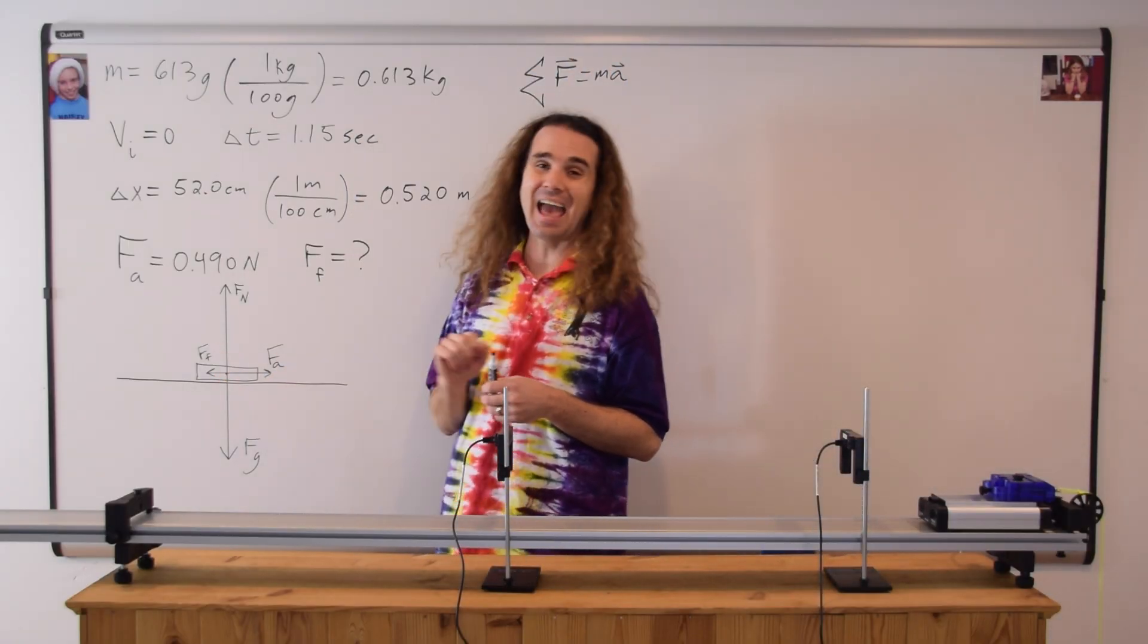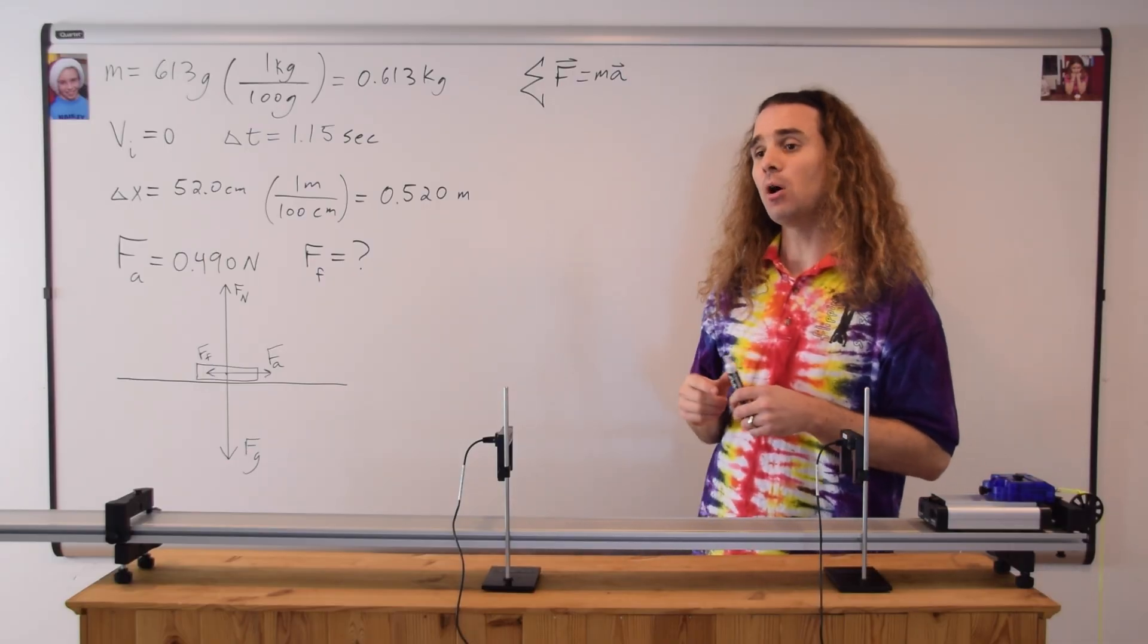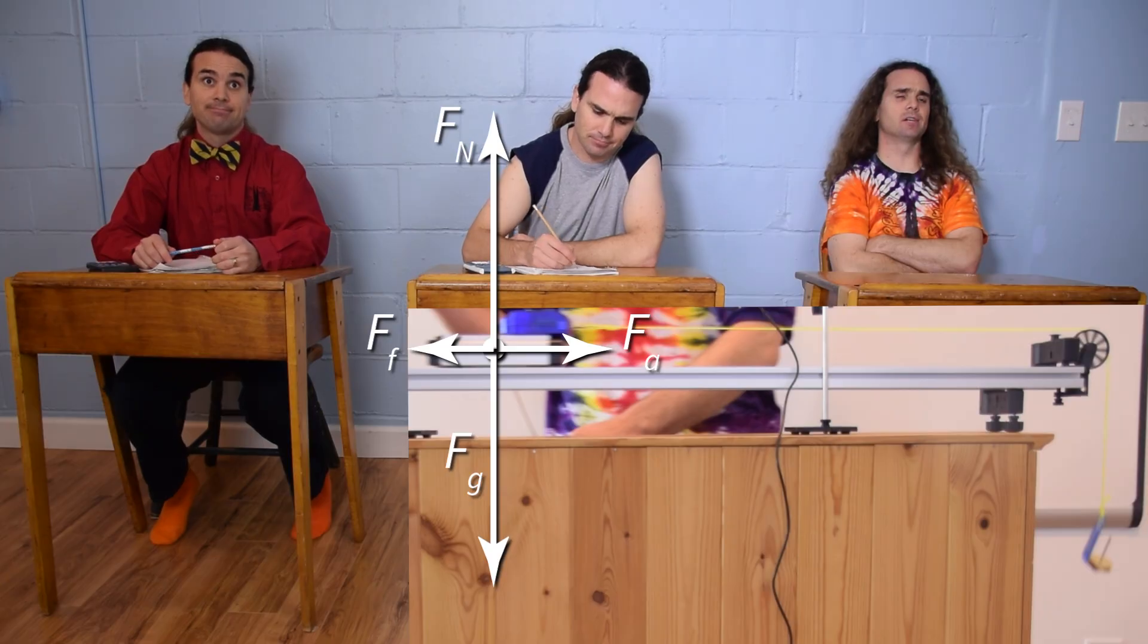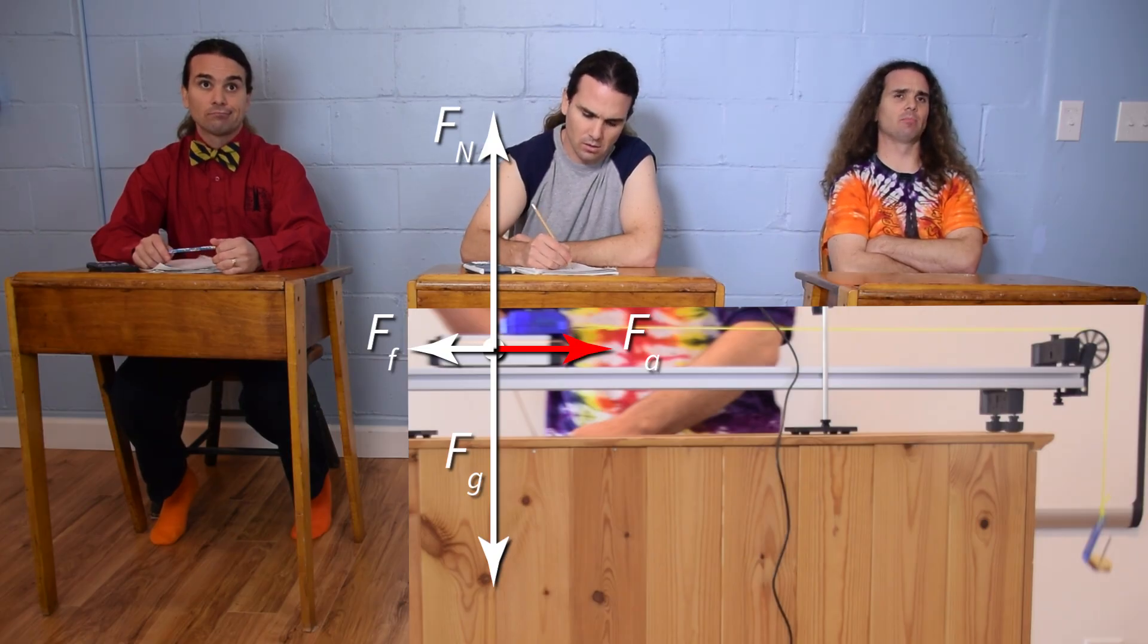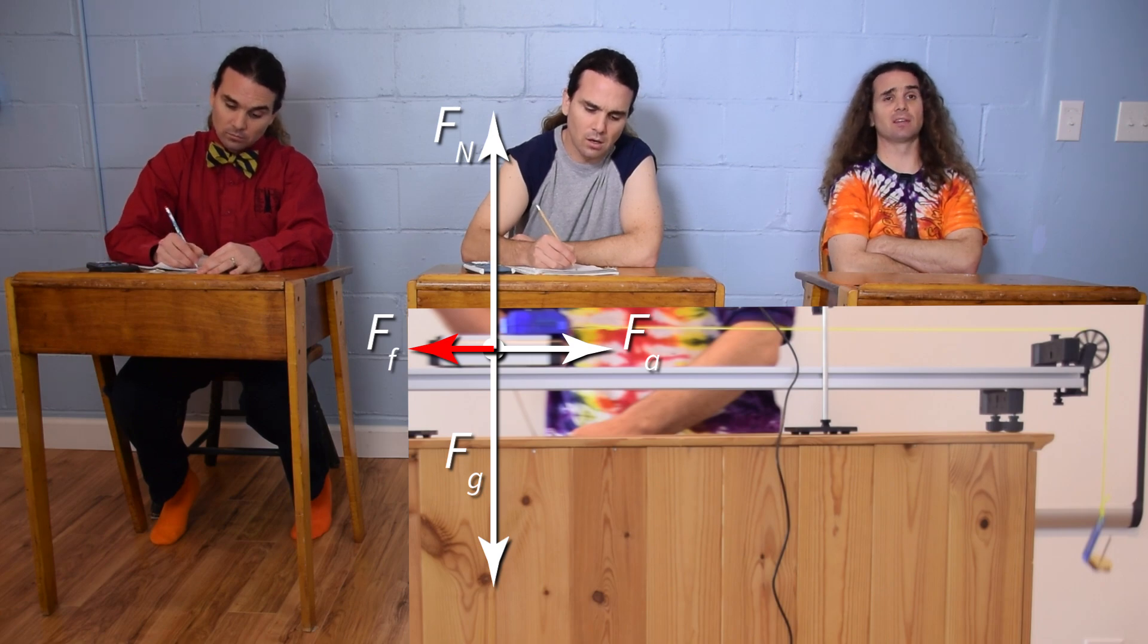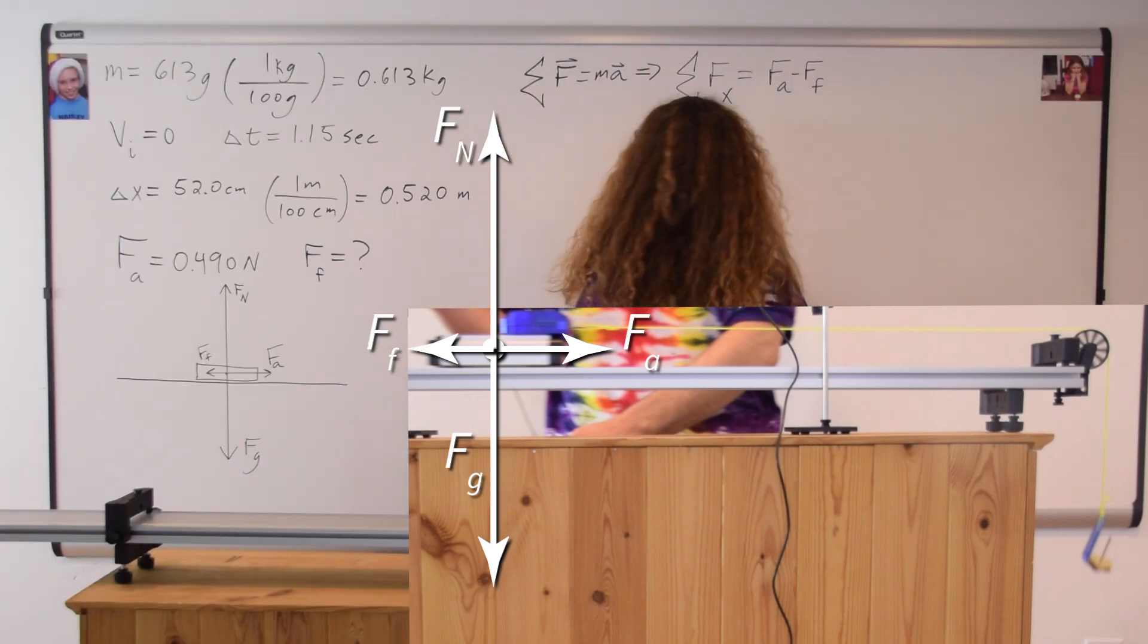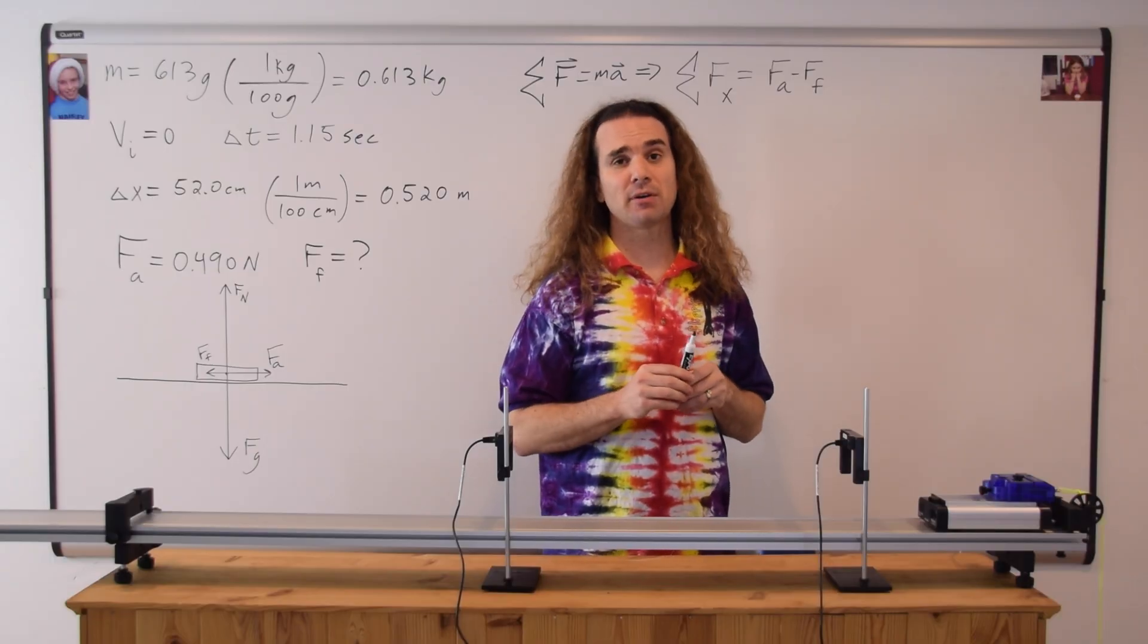We are solving for the force of friction, and the force of friction is in the x-direction. So let's sum the forces in the x-direction. Bo, could you please do that? Yeah. Looking at the free body diagram, the force applied is to the right and positive, and the force of friction is to the left and negative. So the net force in the x-direction equals the force applied minus the force of friction.